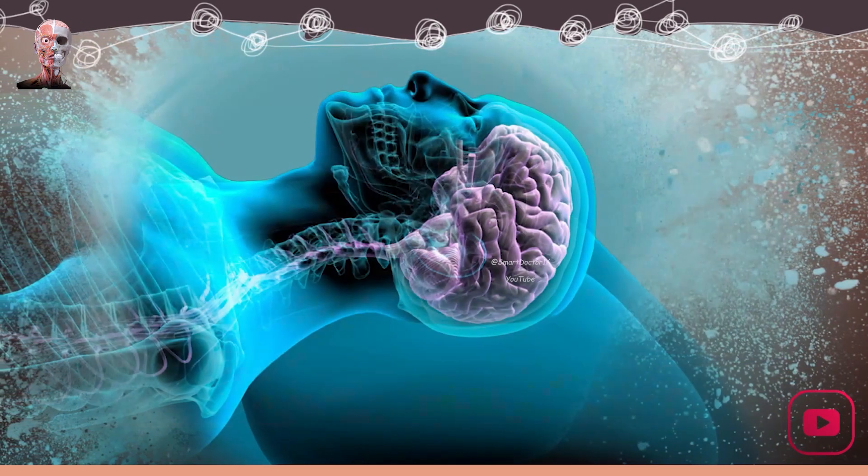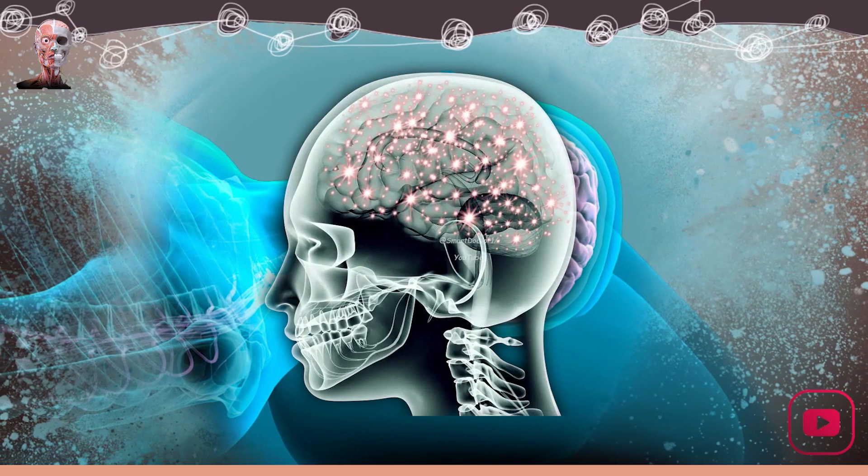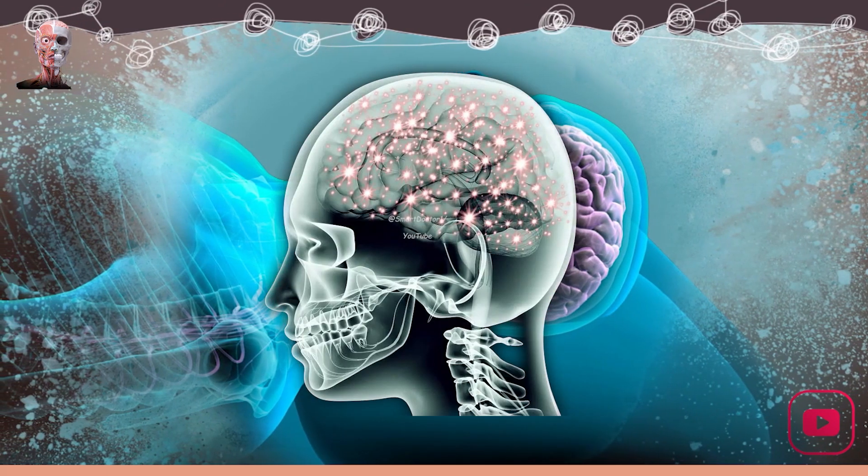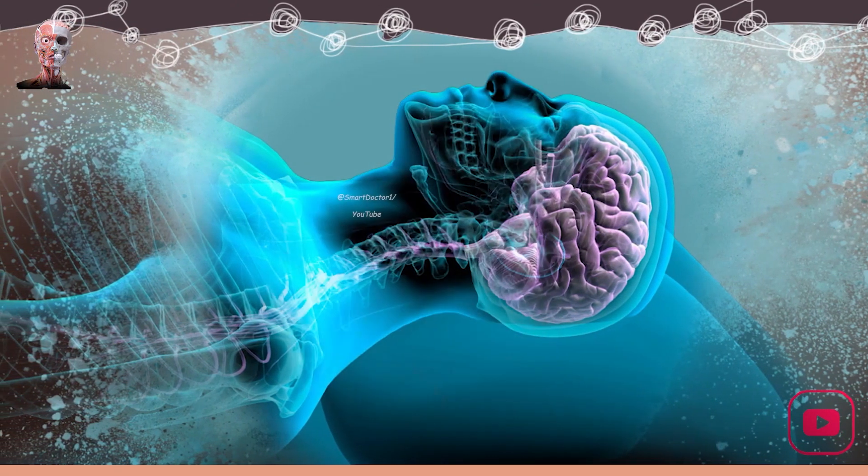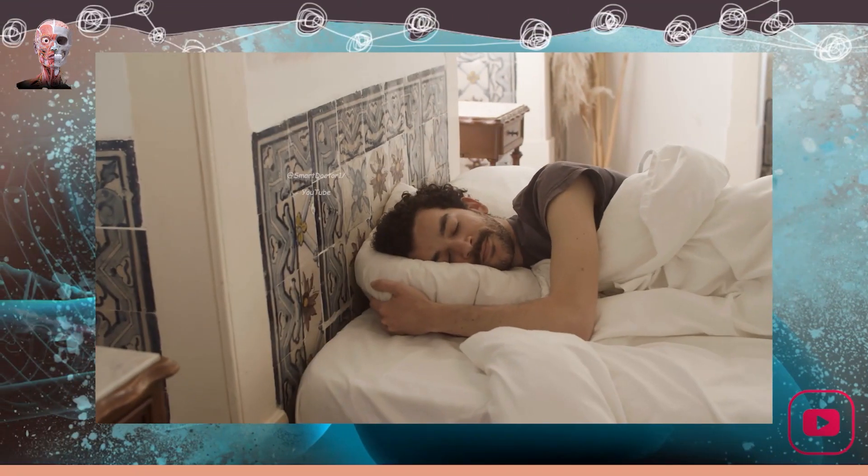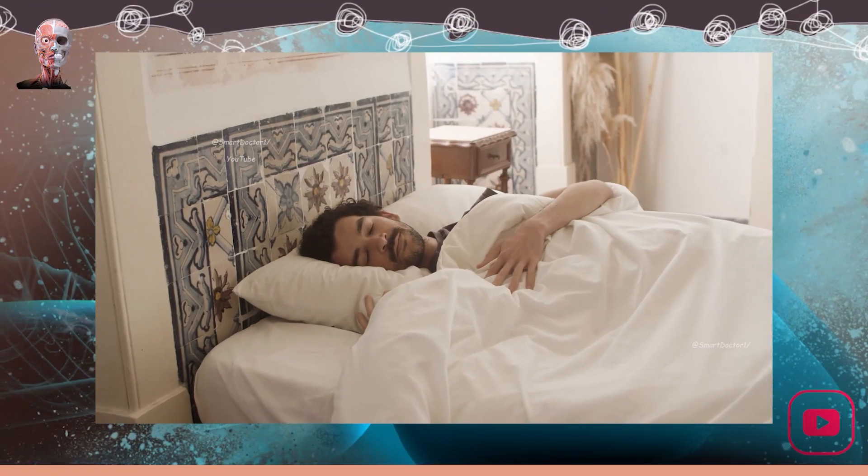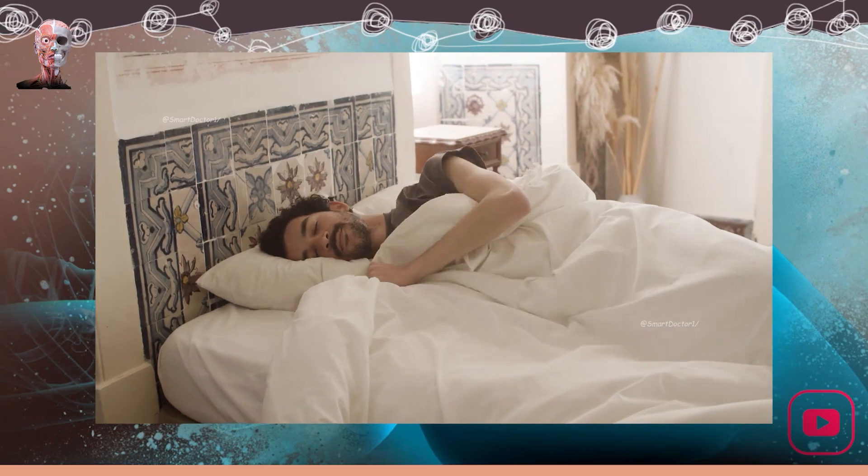We fall asleep when the signals sent by the brain stem reduce the brain's activity. The depth of sleep is not even; deep and superficial stages alternate. While sleeping, the body restores its energy supplies and eliminates metabolic waste products.